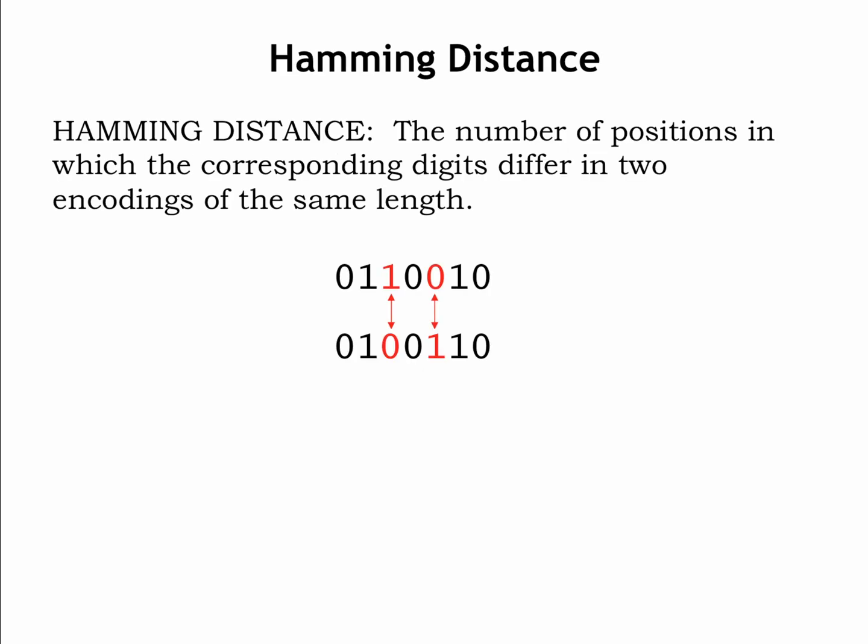To help with our discussion, we'll introduce the notion of hamming distance, defined as the number of positions in which the corresponding digits differ in two encodings of the same length.